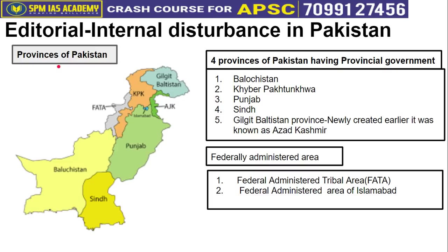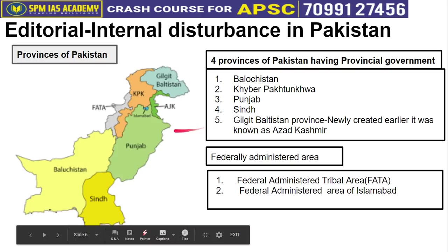To understand this article, we first need to understand Pakistan's territorial distribution — which states and union territories exist within Pakistan. Just as India has 28 states, Pakistan also has different states. There are a total of five provinces in Pakistan, each having a provincial government.